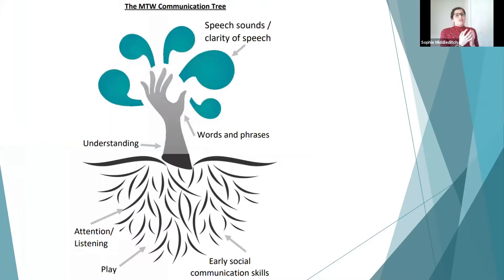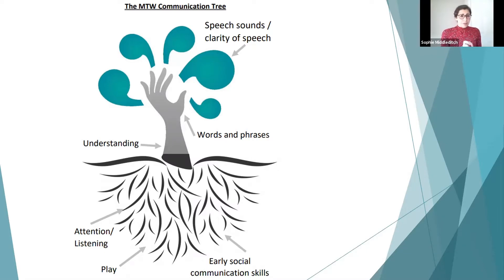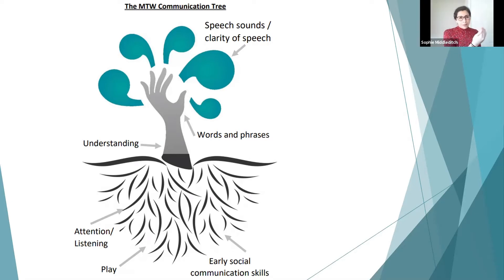With communication, first of all we need to think about what communication actually is — there are so many different elements to it. We've built a communication tree, and at the bottom we have our roots — that's what we start off with, our foundation skills. We have early social communication skills, which is an area that lots of children or adults can struggle with. It can be really tricky, but we have different strategies to support it, and this area may need support throughout.